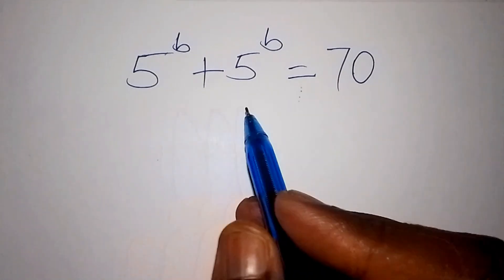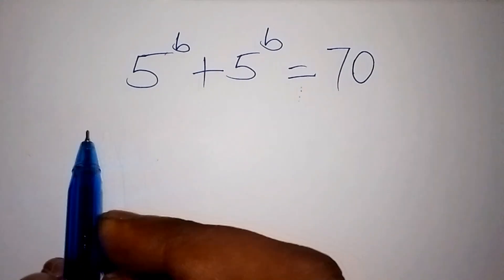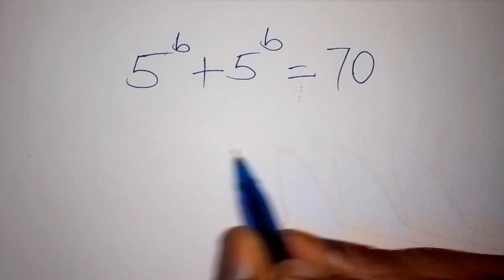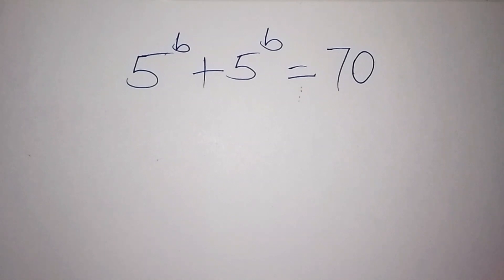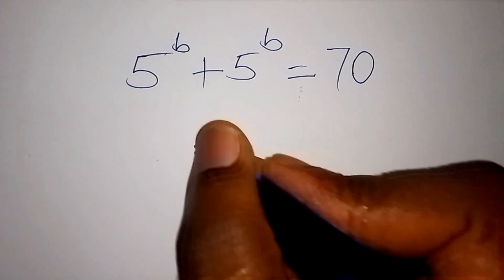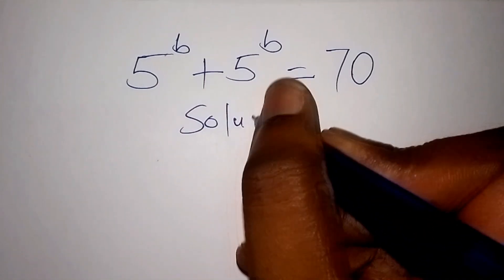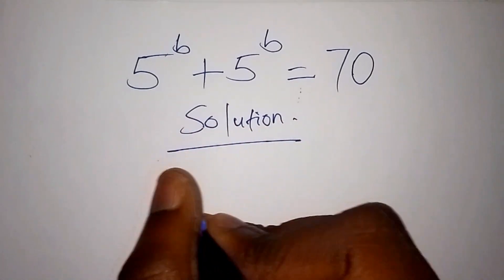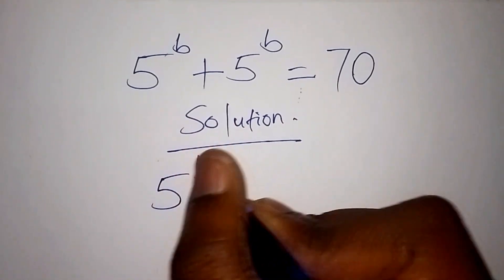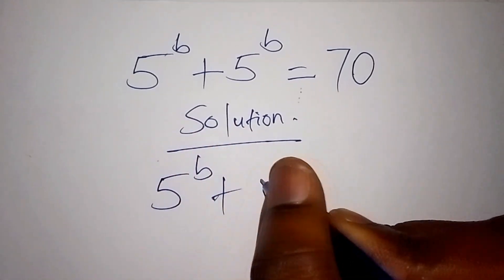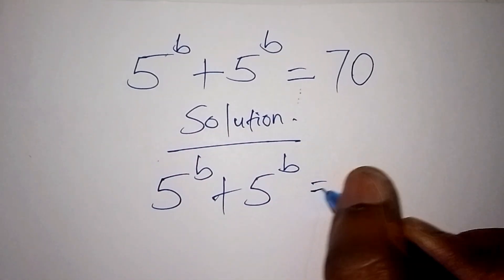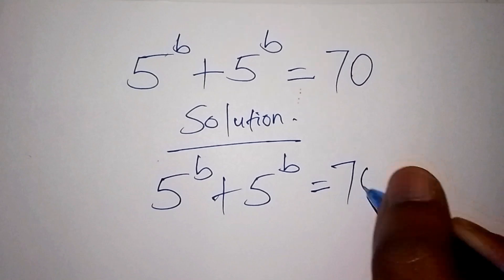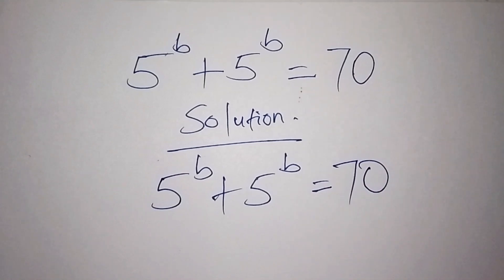Hello, can you solve this maths problem within the shortest time possible? Welcome as we solve it together. Let us now start with the solution. This is the maths problem that I want us to solve: we have 5 to the power of b, plus 5 to the power of b, is equals to 70. So if you are to solve it, which approach would you give?